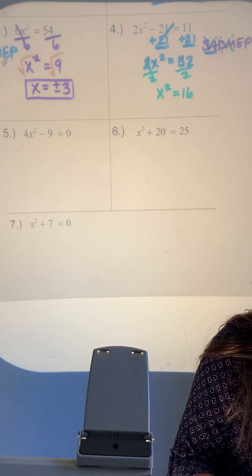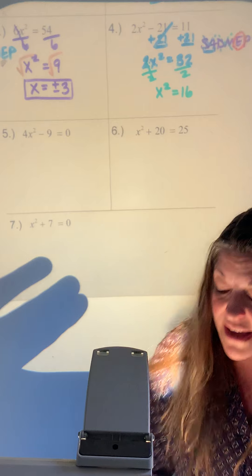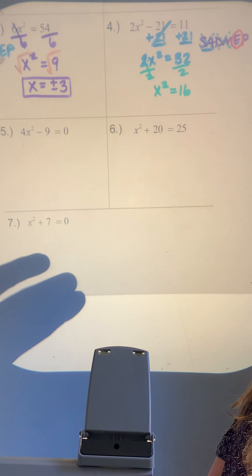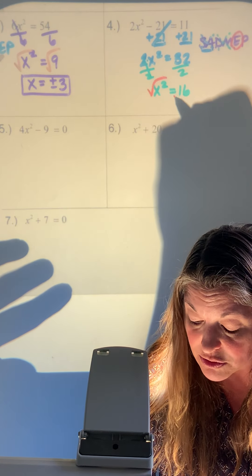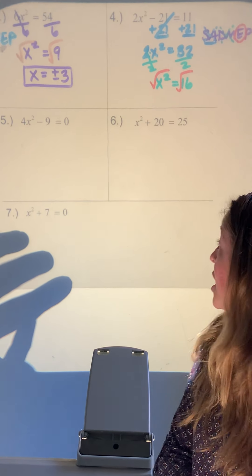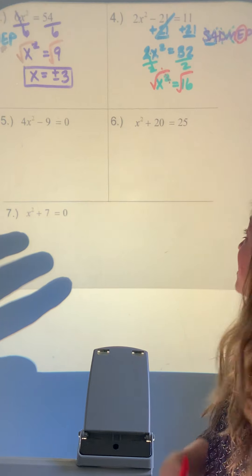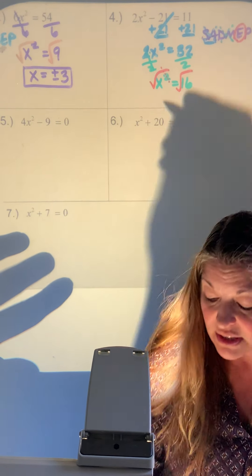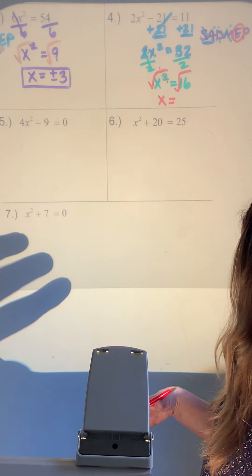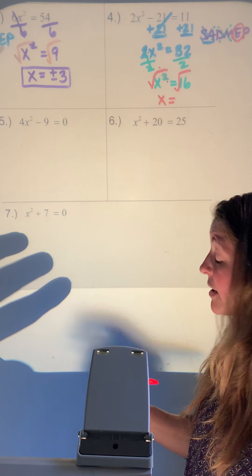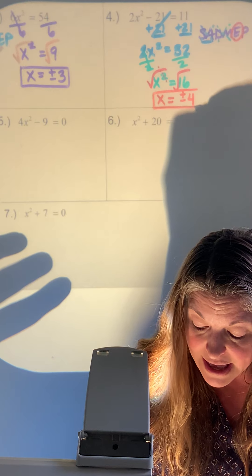Now x squared is all by itself — we're ready to take care of the exponent by square rooting. Square rooting something that's squared completely undoes that operation, leaving just x. 16 is a perfect square — don't forget plus or minus.